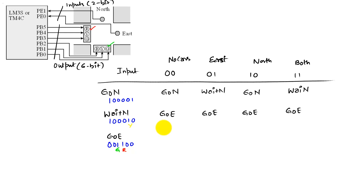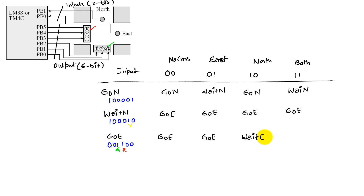If there are no cars, we remain in go east. If there are cars in the east direction, we remain in go east. And if a car now comes up in the north direction, we have to transition just like before — we go through our intermediate state, wait east, where we flash a yellow for the east direction and then eventually transition out. If there's traffic in both directions, we also go to wait east.